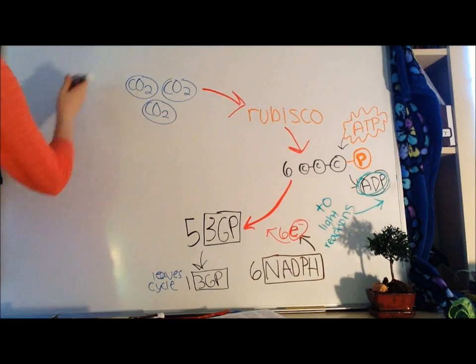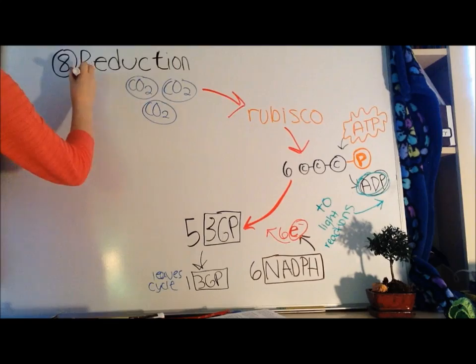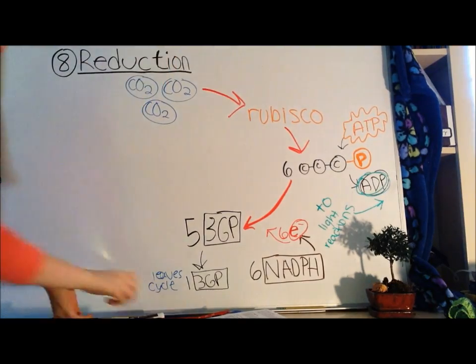Now, that last step was step eight, reduction, because we were adding an electron, which reduces the charge of the three-carbon molecule, called G3P.